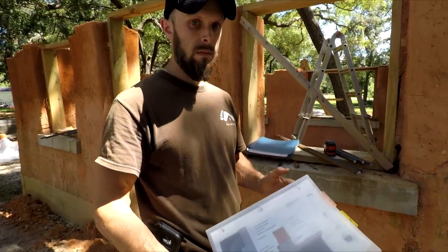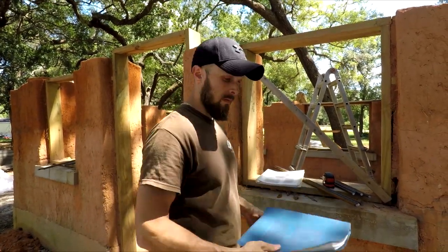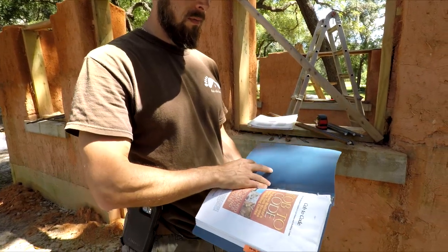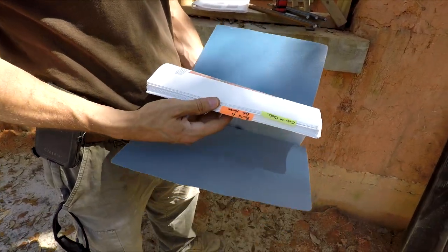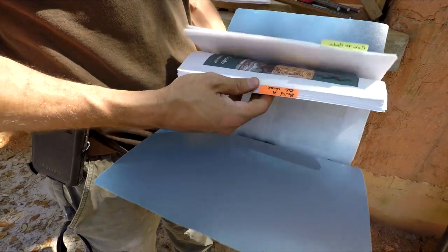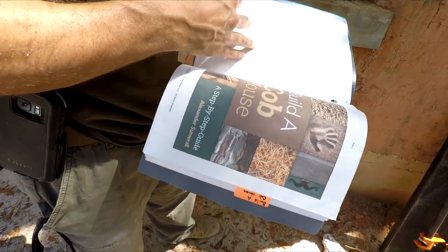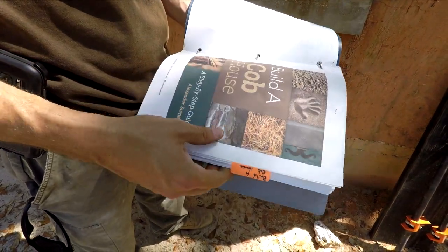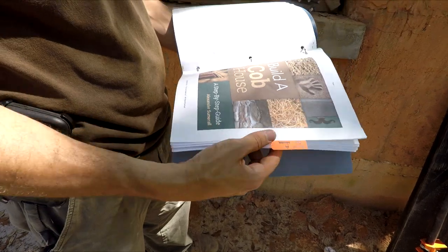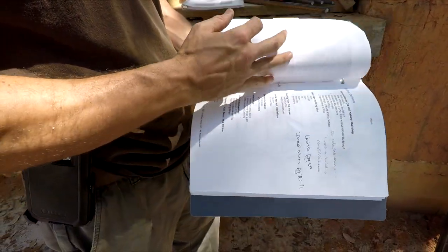You also get both of my ebooks for free. These are downloadable PDFs—I've got one about building codes and my main book, Build a Cob House: Step-by-Step Guide, which goes through every step of building with cob.